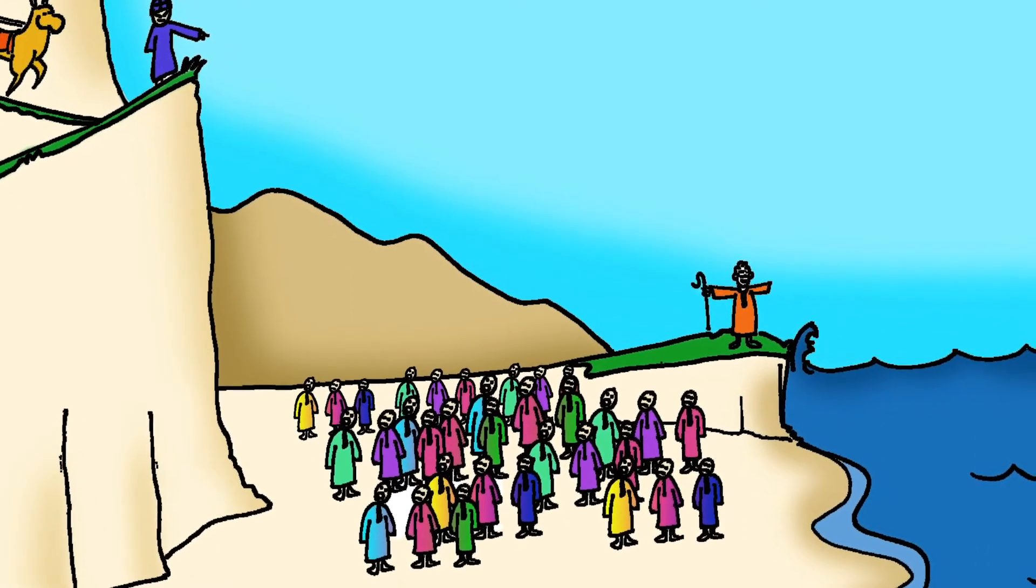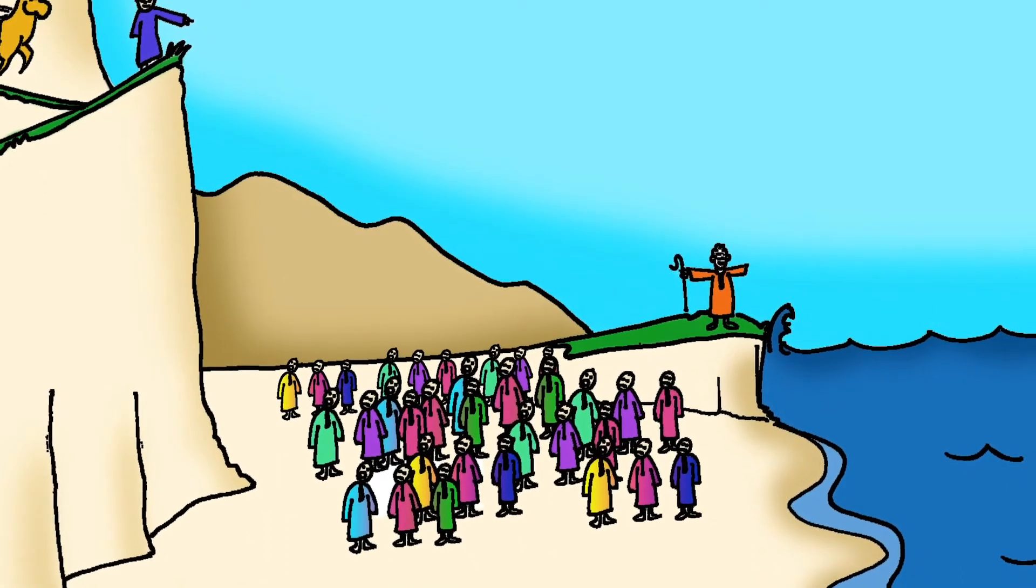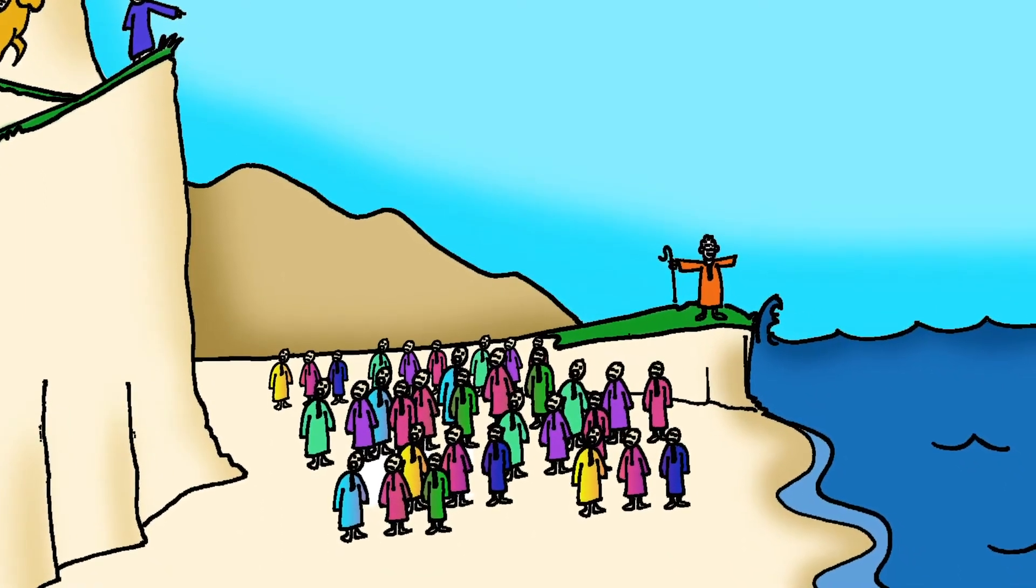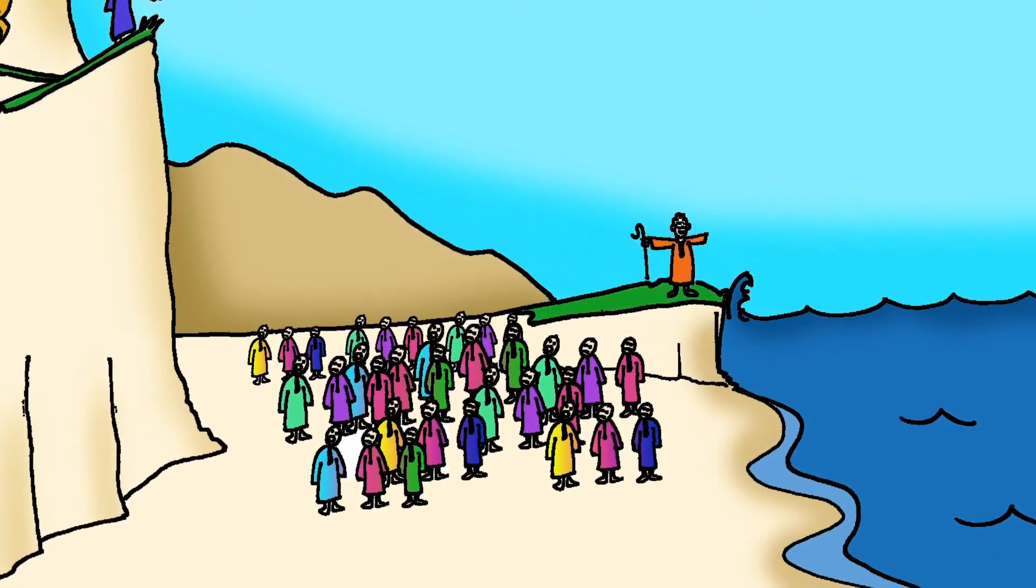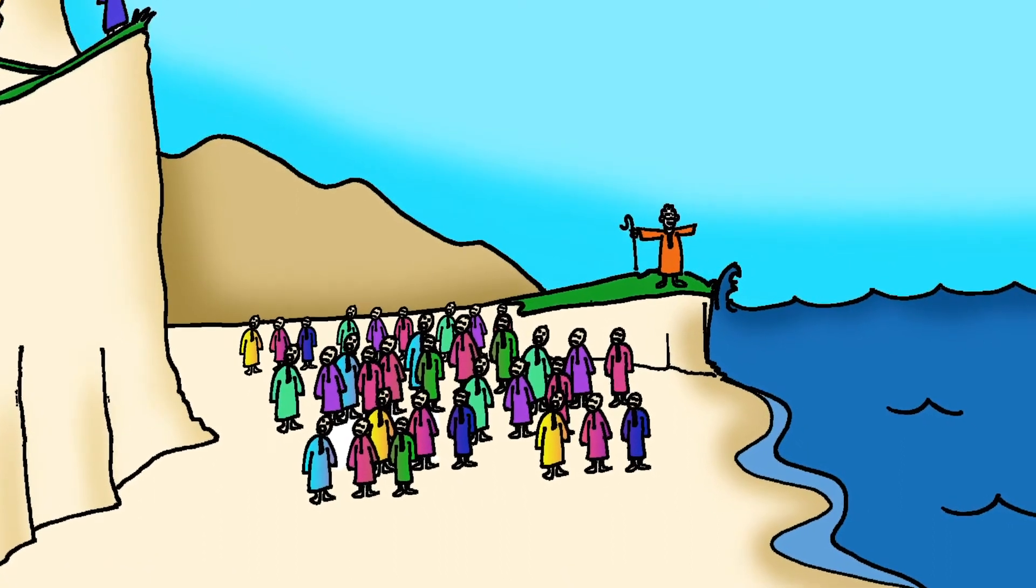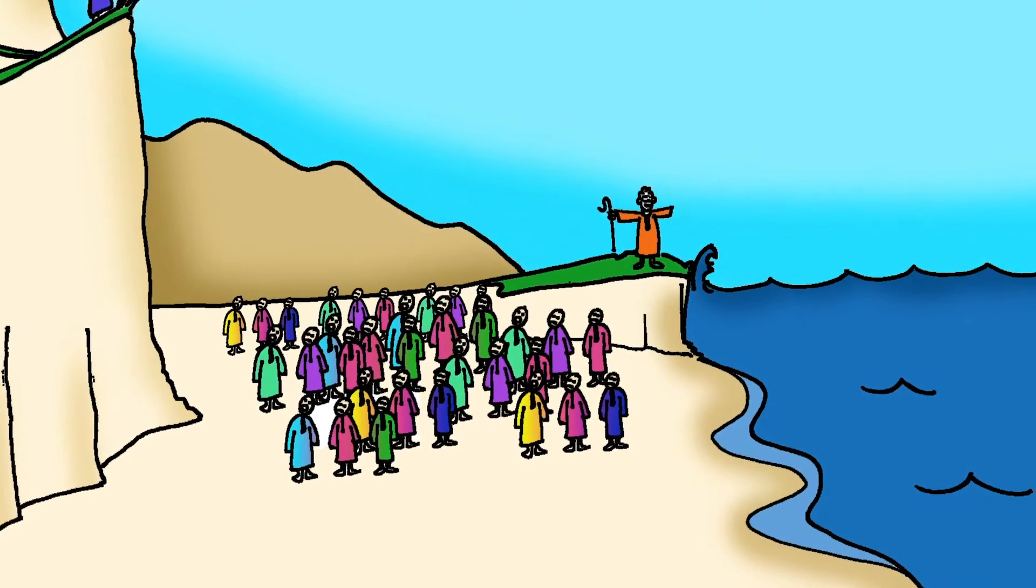God spoke to Moses and said, why are you standing still? Tell the people to keep moving. Raise your walking stick and hold it over the sea. The sea will split. Then the people can walk across the sea on dry land.